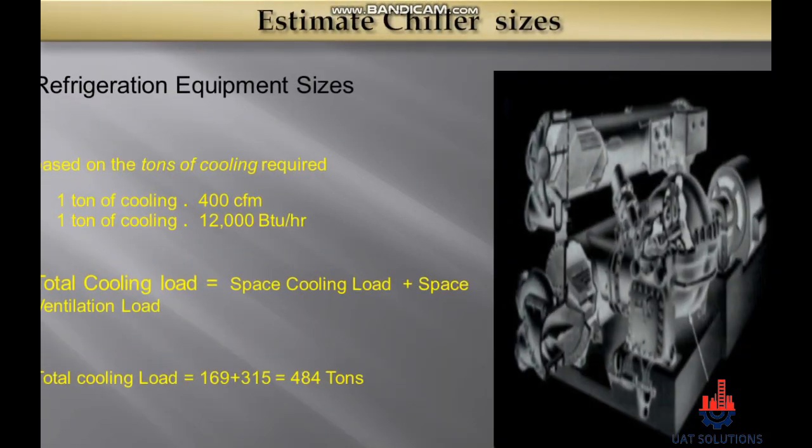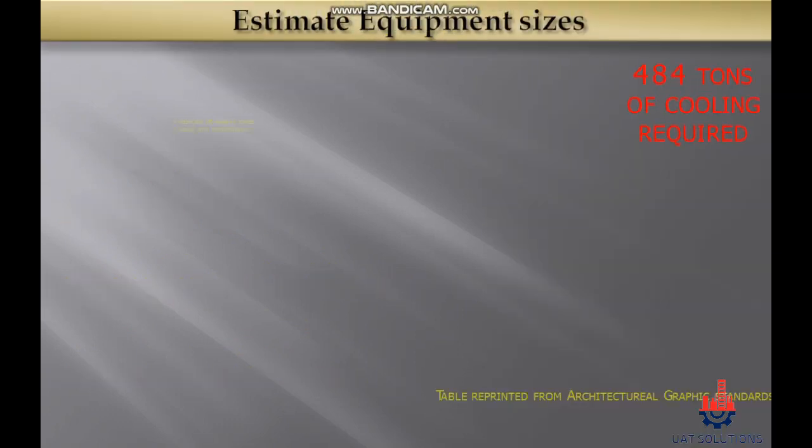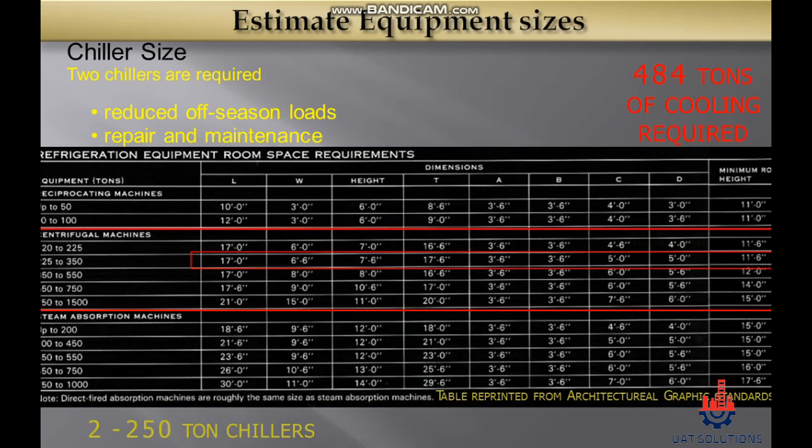The final step is to combine space cooling load and ventilation cooling load: 169 tons for space cooling plus 315 tons for ventilation cooling equals a total refrigeration system requirement of 484 tons. The chiller size and cooling capacity can be selected using the shown table.